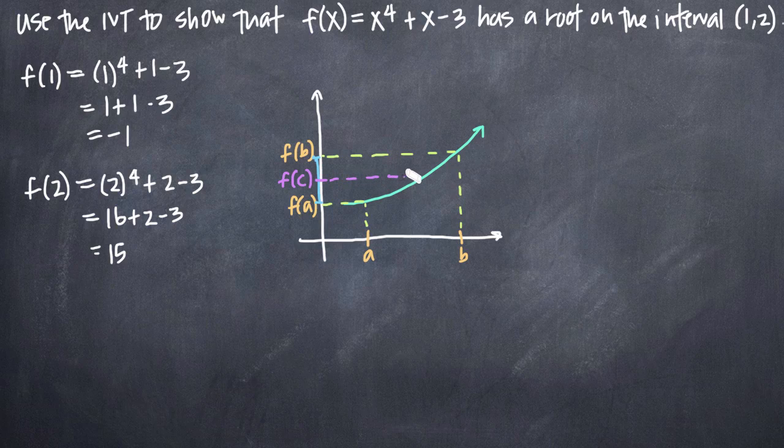by the theorem, there must be a point on the graph, or a point along the x-axis, c, that gives me f(c).